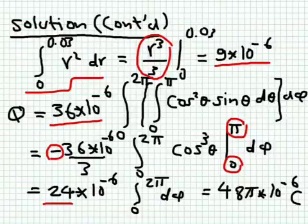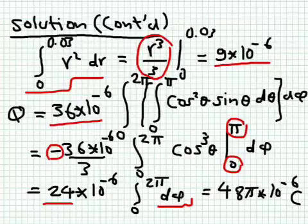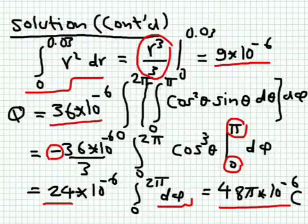The last integral we have to do is the integral relative to φ. So you integrate dφ. The integral of dφ will give you φ. You put upper limit minus lower limit, then you multiply everything by 2π, and the final answer will be 48 by 10 to the minus 6 coulombs. So this volume has 48 microcoulombs total in the whole volume given the non-uniform charge distribution that we have.